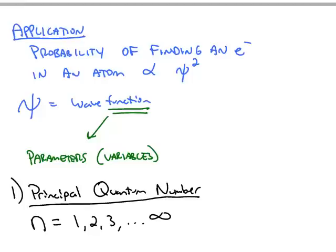The most important application of what we've been studying so far is related to the probability of finding an electron in a certain location of an atom. That probability is proportional to psi squared. Psi is called the wave function, and the wave function is a complicated mathematical function that we're not going to go into in this class, but we are going to look at the variables that go into that function.